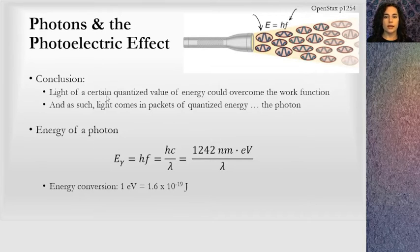The conclusion here is that light of a certain quantized value of energy could overcome this work function. Light comes in packets of quantized energy. A photon comes in, hits that electron, gets absorbed by that electron, and then the electron is ejected from the surface. The energy of that photon is given by HF, which we also know is HC over lambda. C equals lambda F.